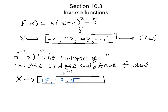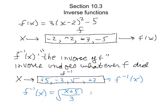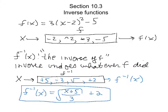The very last step going right to left is subtract 2, and the opposite of that is add 2. So f inverse of x, written as a function, does the following: first add 5, giving x plus 5; then divide by 3; then take the square root; and finally add 2. That is the inverse of f.